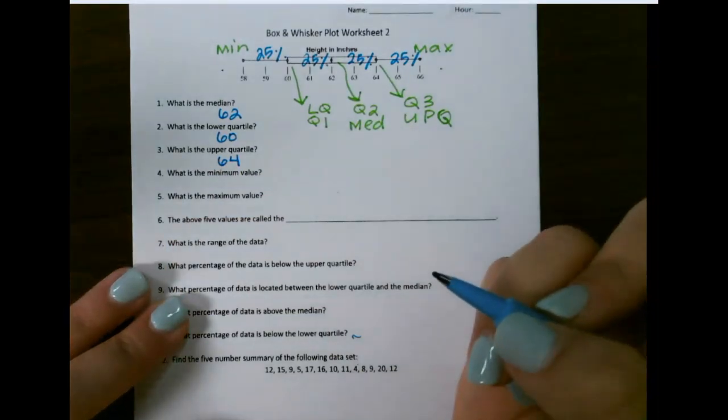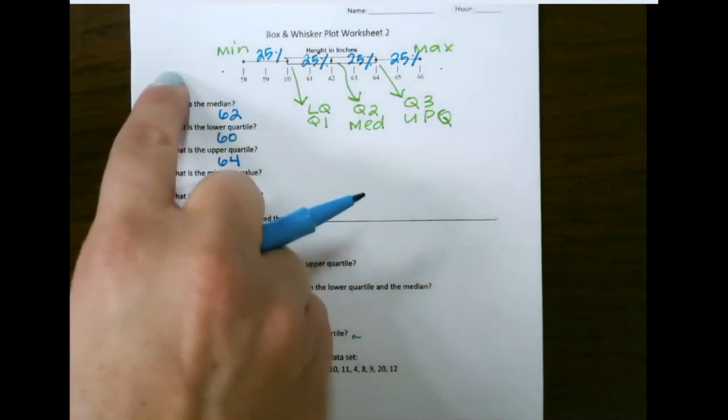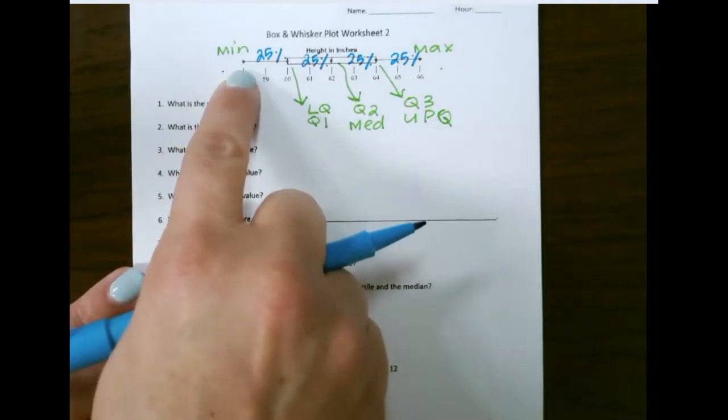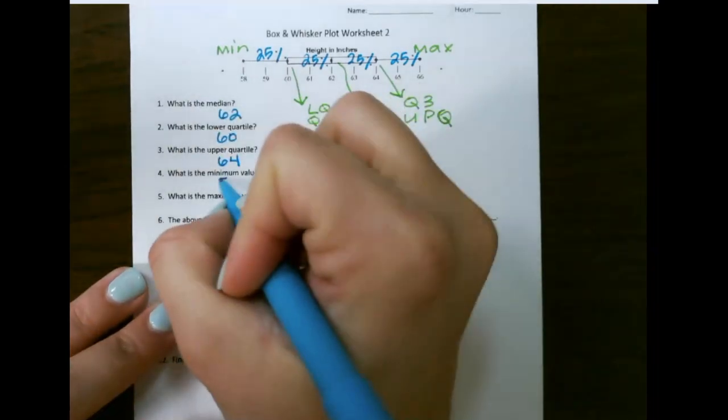For minimum, that's going to be the lowest point on your number line that is plotted. Sometimes your number line will go further than just the minimum number, so you have to be sure that it's the furthest point to the left that's actually plotted, and that's 58.